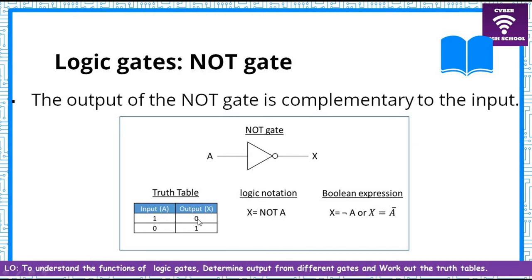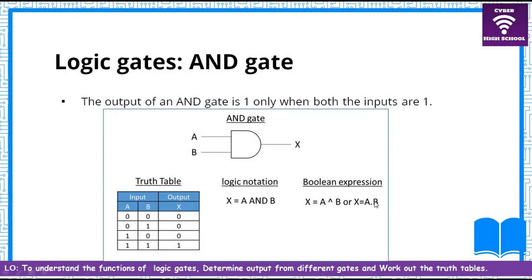The truth table of a NOT gate: when the input is 1, the output is 0; when the input is 0, the output is 1. The logic notation is x = NOT A. The Boolean expression is represented as x = Ā (A with a bar on top). Every time you see this expression, just know it represents the NOT gate.